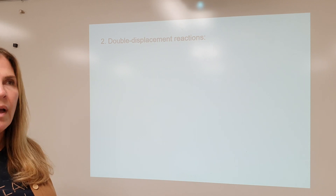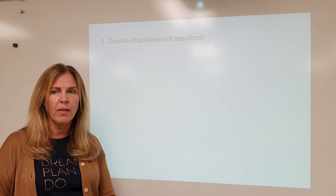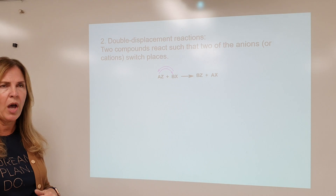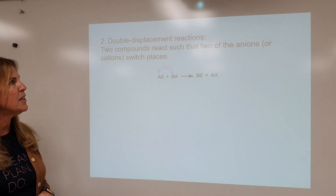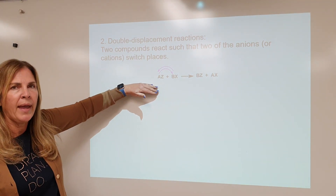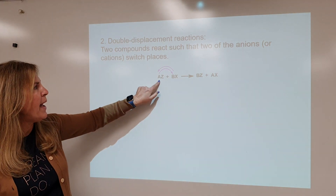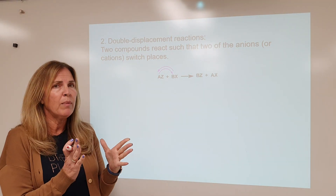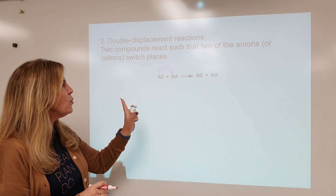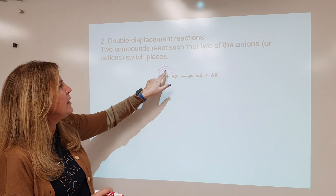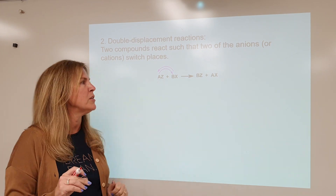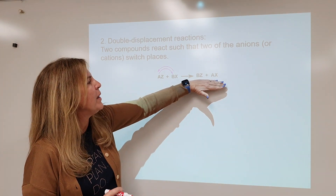Double displacement. Single displacement is element plus compound or compound plus element. Double displacement: we are looking at compound plus compound. Two compounds react such that the anions or cations switch places. We have compound AB and compound ZX — that's how we recognize it as double replacement. You can look at it as A and B trading partners, or as X and Z trading partners — one or the other, it doesn't matter.